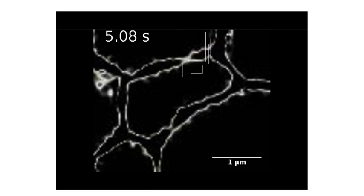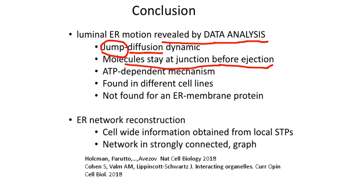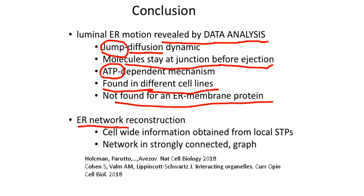To conclude, the luminal ER can be revealed by the analysis of data using a stochastic model for the motion — specifically a jump inside the tubule, where diffusion mostly describes what happens inside the node. It seems that molecules stay at junctions before they are ejected, and this mechanism depends on ATP. This result was found in different cell lines and was not found for membrane ER proteins.